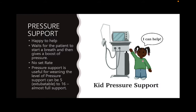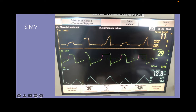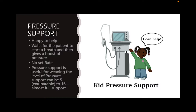Sometimes siblings team up — that's what happens with SIMV plus Pressure Support. Lazy SIMV says: you told me to give a rate of 15, that's all I'm doing. But little sister Pressure Support comes along and says: I can help for the extra breaths. So if your rate is 12 or 15 and your patient is breathing at 30, the machine gives a little boost of pressure for those spontaneous breaths. The patient isn't completely on their own because Pressure Support comes along to help.